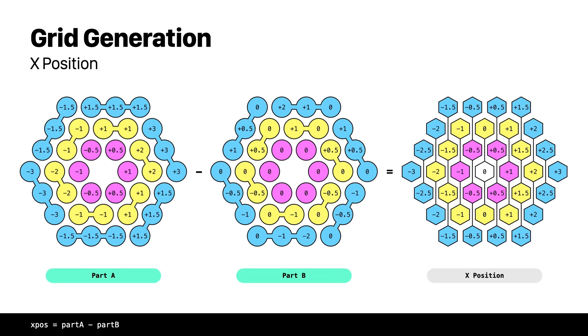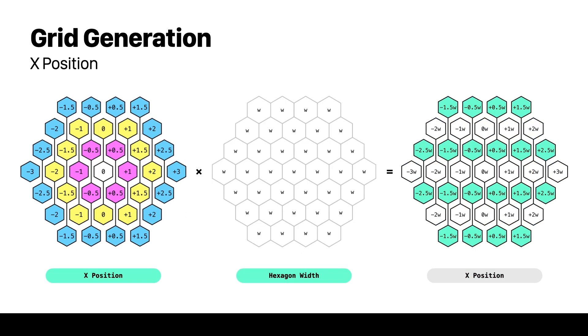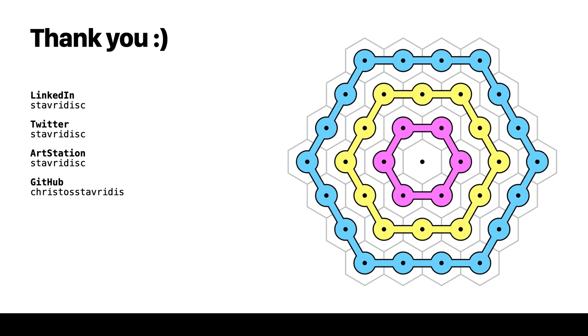After we multiply those together we get part b as a result. Then we need to subtract part b from part a. We multiply those values with a hexagon width and we get the x position for the points. And that was a brief breakdown of the math and patterns that I used to generate the hexagonal grid for this project.